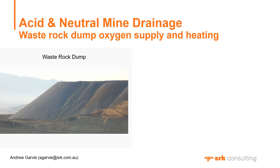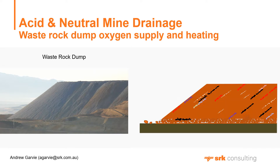Acid mine drainage is often associated with the oxidation of sulphide minerals such as pyrite that are deposited in waste rock dumps constructed at mines. The sulphide mineral oxidation depends on oxygen supply from the atmosphere. The two oxygen transport mechanisms are oxygen diffusion and gas advection.